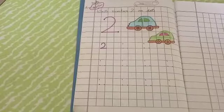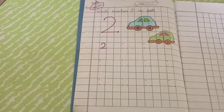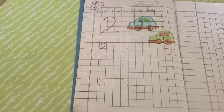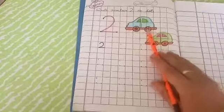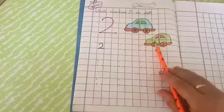Hello kids, now we will write number 2 on dots. Yes, see kids, what are these? These are cars.